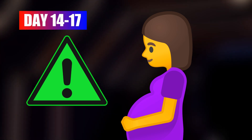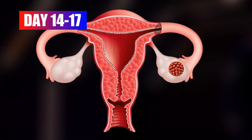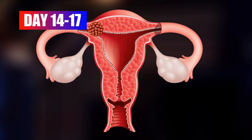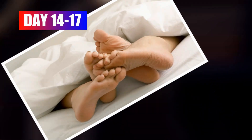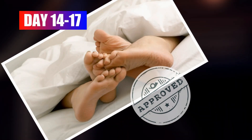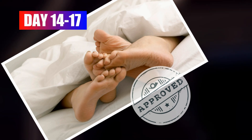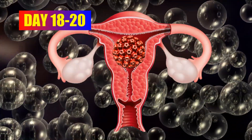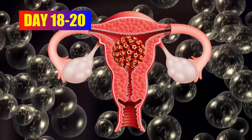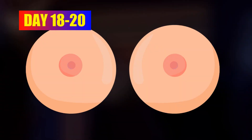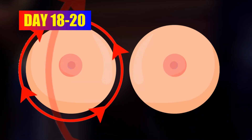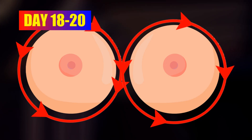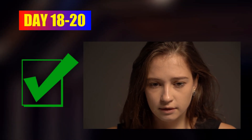On day 15, your egg will start its journey in the tube. If you want to get pregnant, you need to have intercourse at this time. Progesterone makes the uterus comfortable to place and implant the egg. Estrogen and progesterone can make your breasts tender during this time, which is a natural symptom.